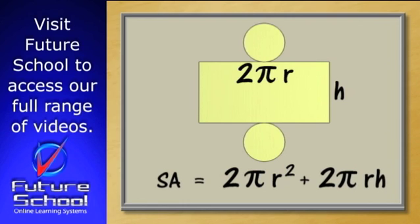Our formula now looks like this: two times pi times r squared plus two times pi times r times h.